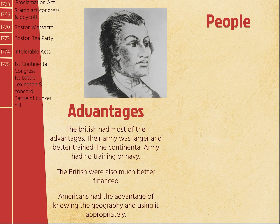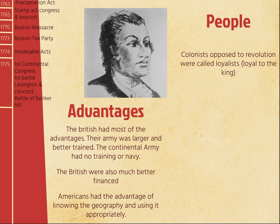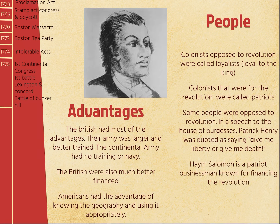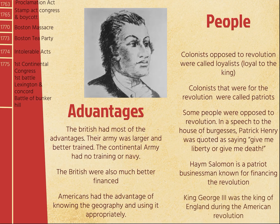Colonists opposed to the Revolution were called Loyalists — loyal to the king. Colonists that were for the Revolution were called Patriots. Patrick Henry gave a speech at the House of Burgesses in Virginia and said, 'Give me liberty or give me death' — he would rather die fighting for freedom than live with tyranny. Haym Salomon is a patriot businessman known for financing pretty much the whole Revolution. King George III was the king of England during the American Revolution. He was kind of crazy.